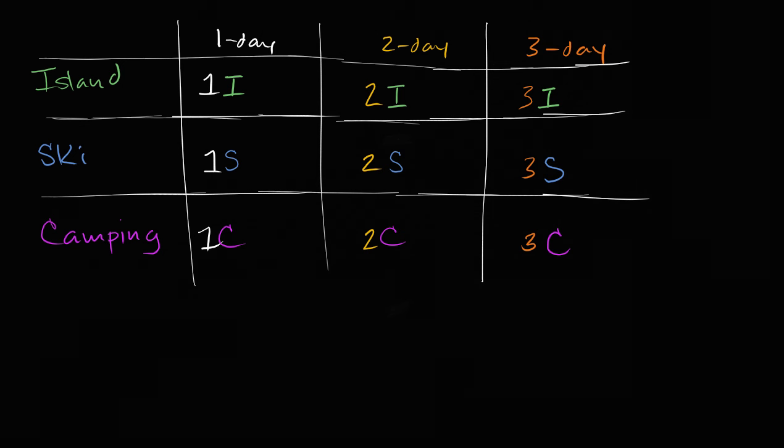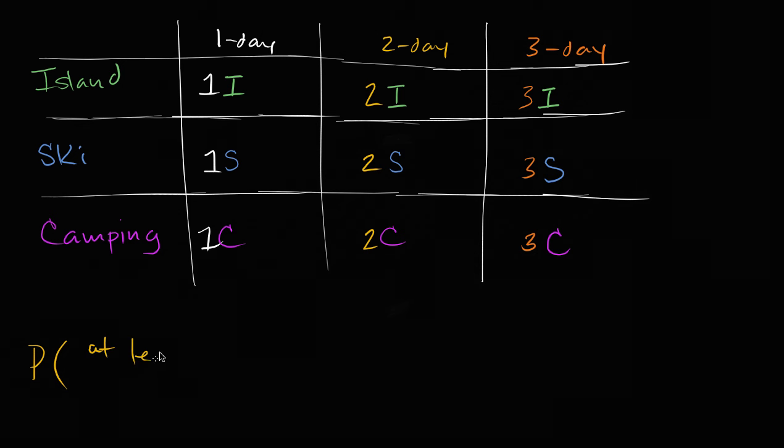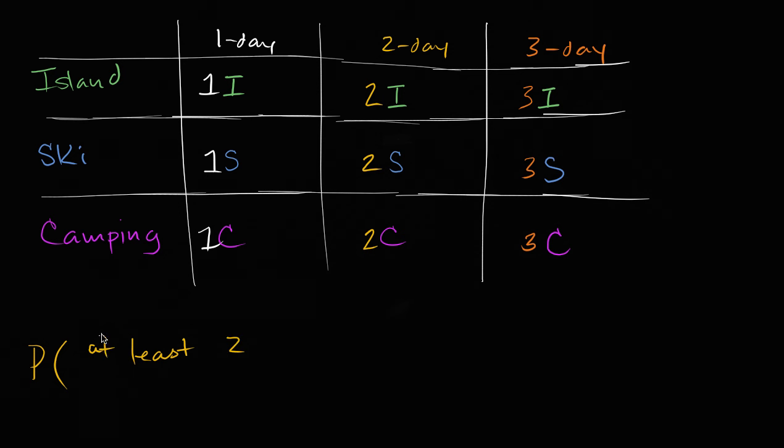So if we do assume equally likely outcomes, we can figure out a probability. Maybe you live in some place that's cold, and you're really not in the mood to go skiing. In fact, you'd like to spend several days away from the snow. So let's ask ourselves a question. What is the probability that you're going to win at least two days on a vacation without snow?